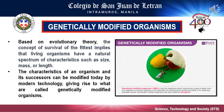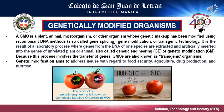Next, let's talk about GMO or Genetically Modified Organisms. Genetically Modified Organisms are living organisms whose genetic material has been artificially manipulated in a laboratory through genetic engineering. This creates combinations of plant, animal, bacteria, and virus genes that do not occur in nature or through traditional cross-breeding methods. A GMO is a plant, animal, microorganism, or other organism whose genetic makeup has been modified using recombinant DNA methods, also called gene splicing, gene modification, or transgenic technology. A wide variety of organisms have been genetically modified, from animals to plants and microorganisms.